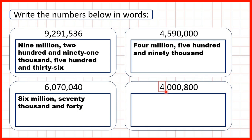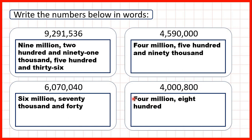Now here before the first comma we have a four, so that's four million. Then we look at the next three digits between the commas because this tells us how many thousands we have. But here we have zeros in all three of our thousands digits, so we don't write the word thousand. Instead we just move on and look at the last three digits. We have eight hundred, so our number is just four million eight hundred. We don't write the word thousand because all the digits in our hundred thousands, ten thousands, and thousands places are zeros, and if we have zeros we don't write anything.